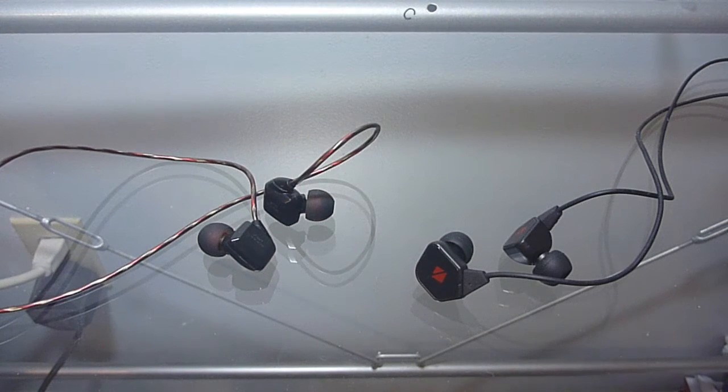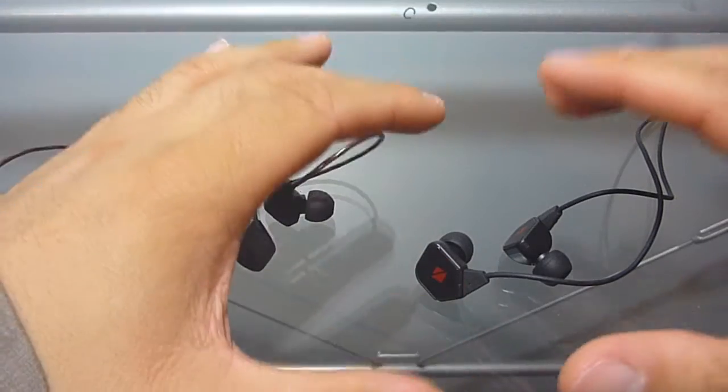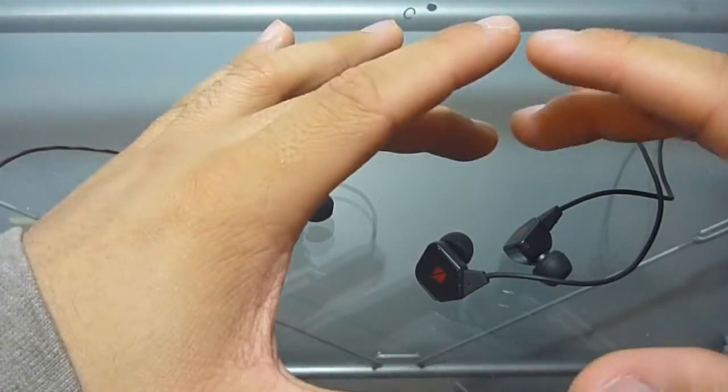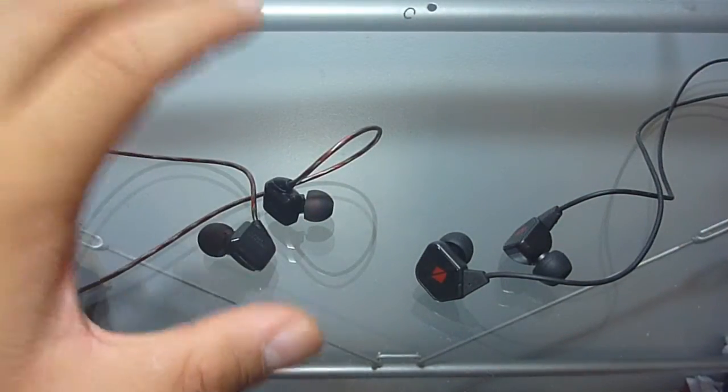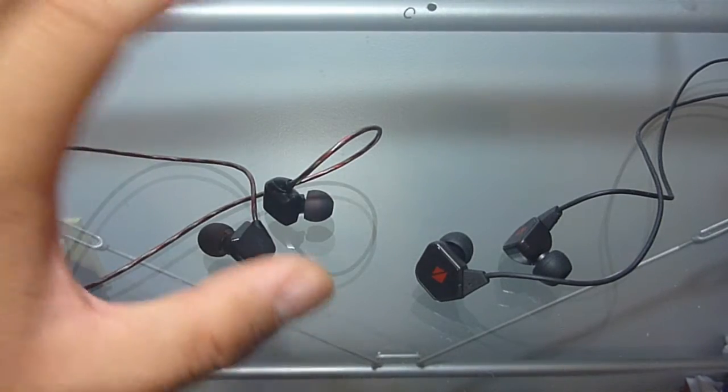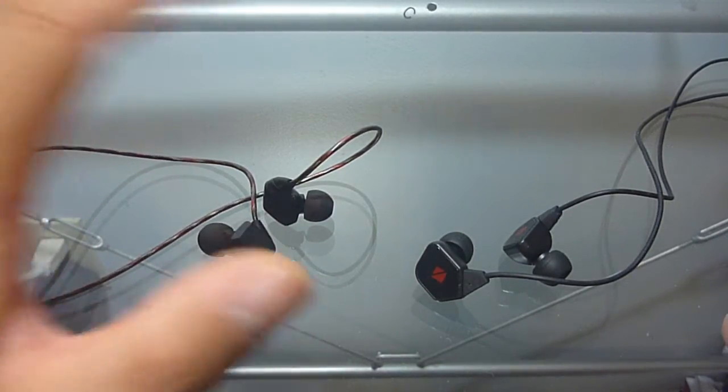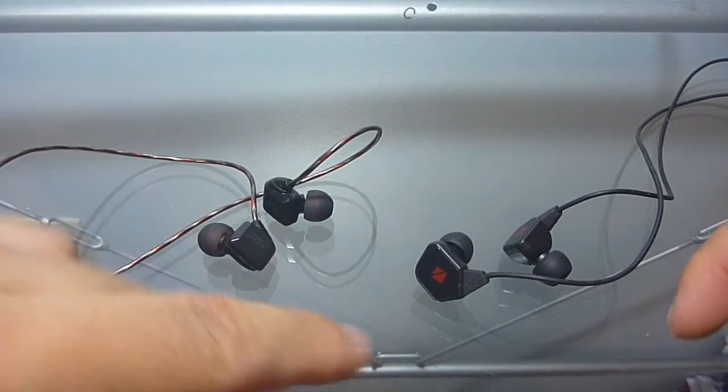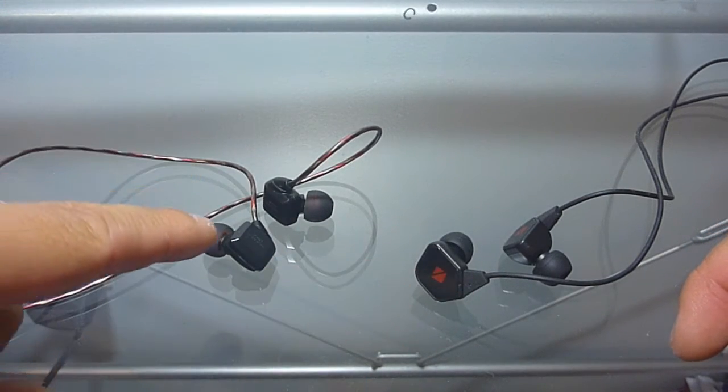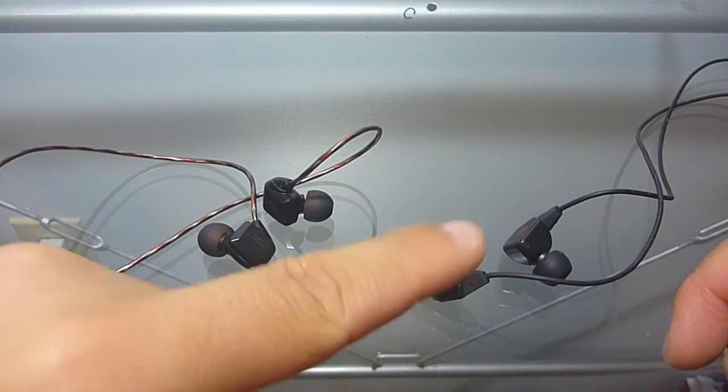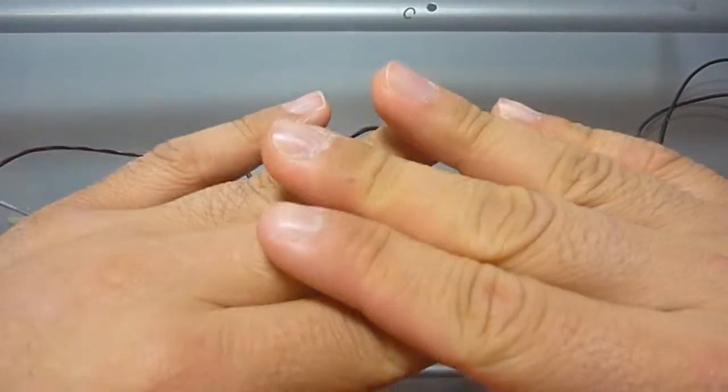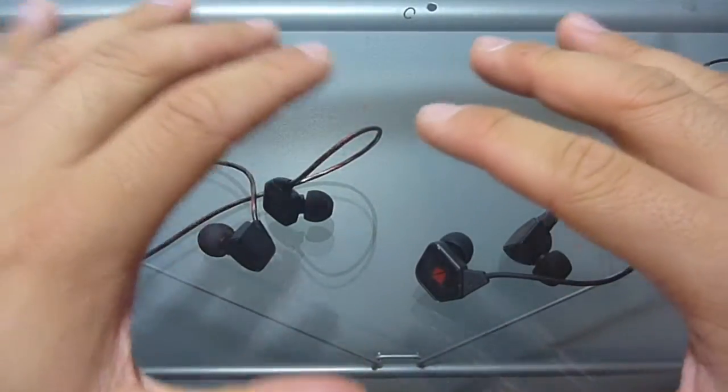Now in terms of sound quality, remember the Havi B3 Pro 1s are priced at $60 while the vSonic GR07s are now priced at $127 but they were originally $179.99. That said, that does not mean that the vSonic GR07s are three times better than the Havi B3 Pro 1s because that is totally not true and if that's the case, I would not even bother making this comparison video.